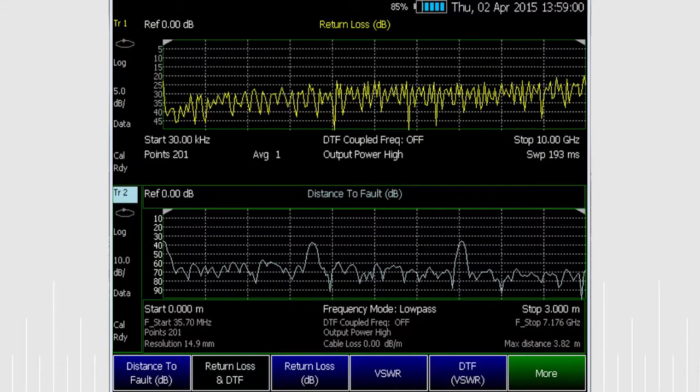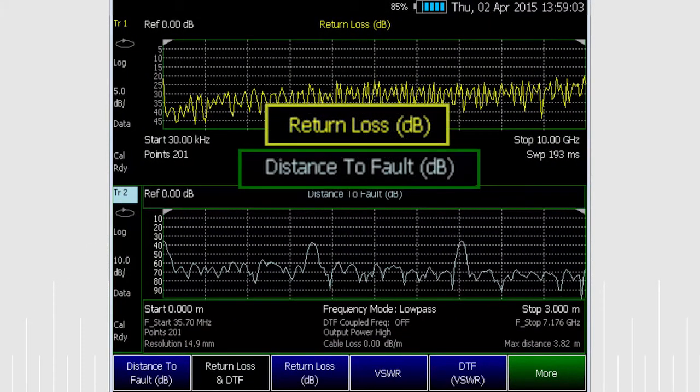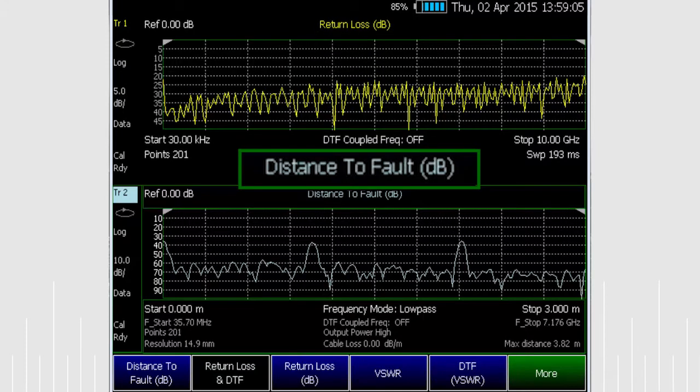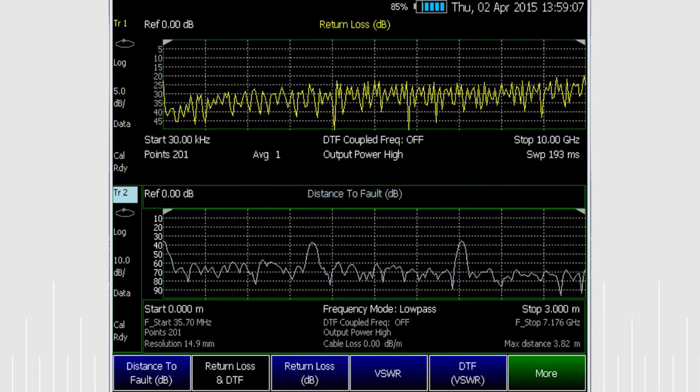The first step in analyzing the cable's performance is to line sweep. We'll be looking at return loss and distance to fault. We see a reasonable return loss of about 30 dB for the functional cable and a distance to the end of the cable assembly at about 2 meters. You will also see the initial FieldFox to cable connection and the cable to cable connections as reflections.